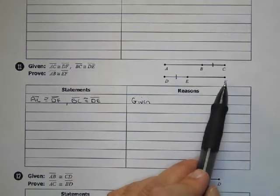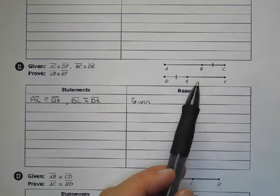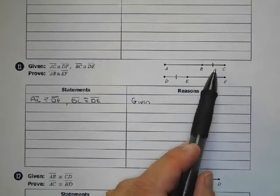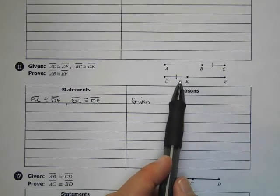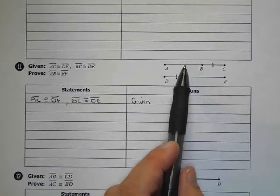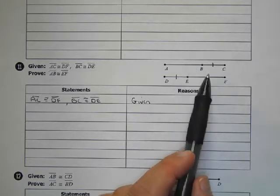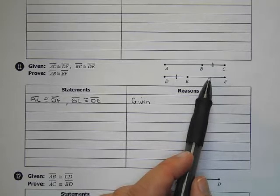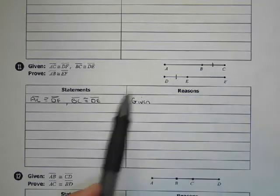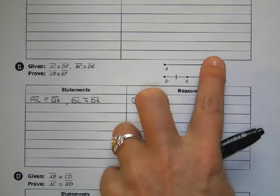So what we're trying to show is that because BC and DE are also equal, basically if I took those off the two segments, then what I'm left with, AB and EF have to be equal to each other. So while it looks like you could just say, hey, just remove those and then these are equal, it's not that easy. We have to prove it.